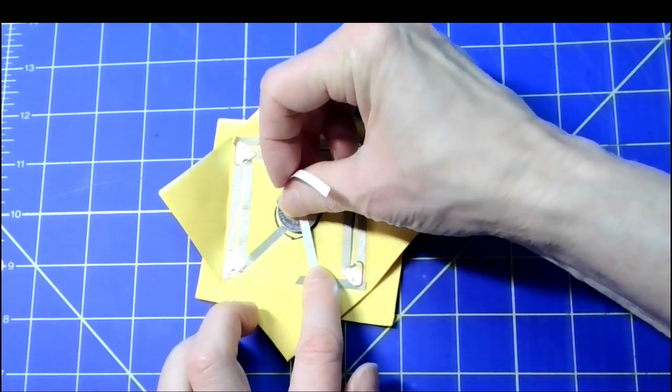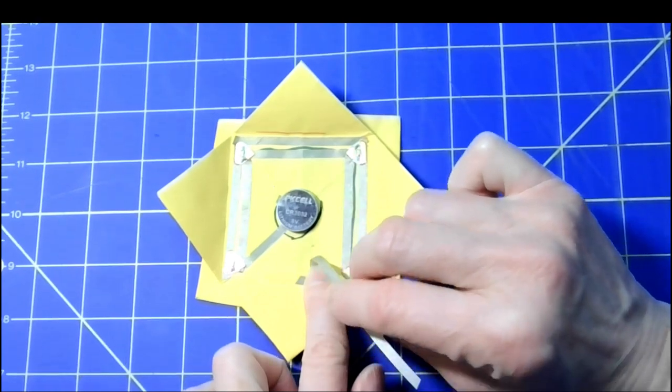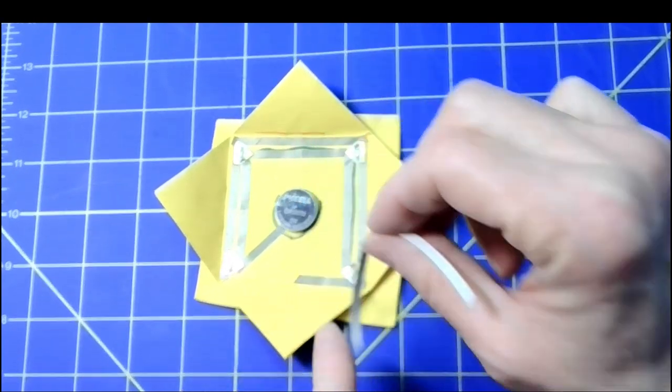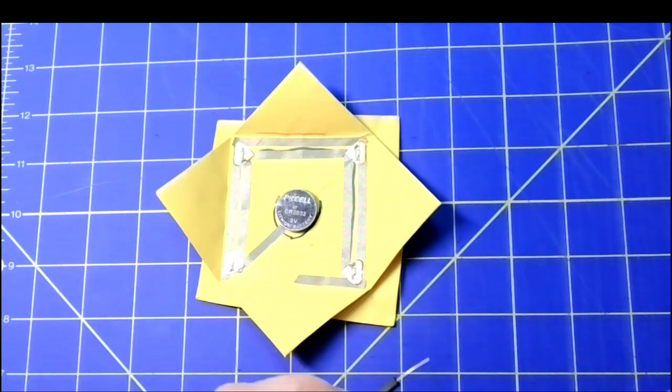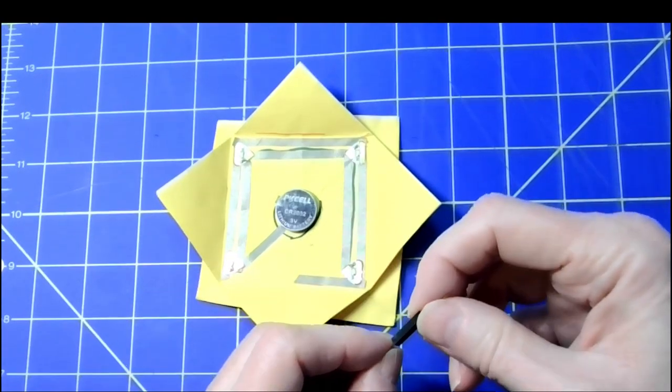Then test the circuit by taking an extra piece of conductive tape and laying it between the end of the positive tape and the top of the battery. This is where the reed switch will go.